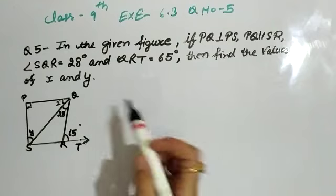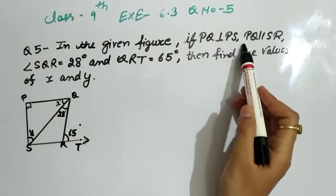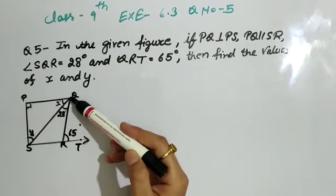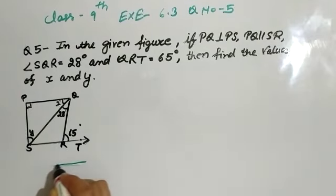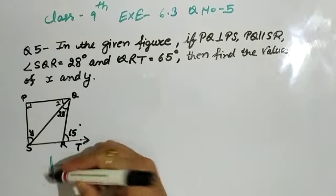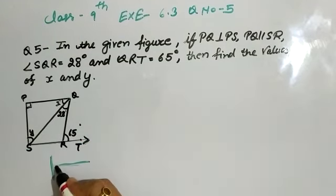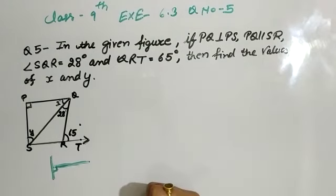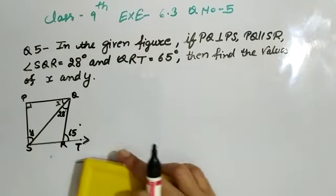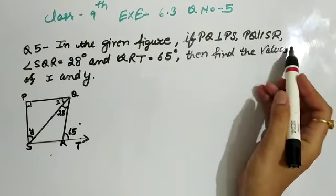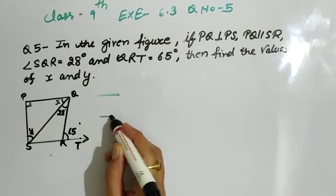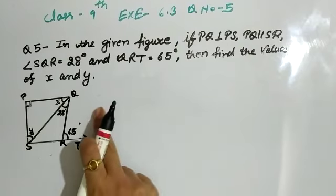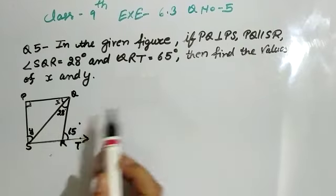In the given figure, PQ is perpendicular to PS — this is PQ and it is perpendicular to PS, meaning there is a 90-degree angle here. Also, PQ is parallel to SR — this line PQ and this line SR are parallel, both going in the same direction.